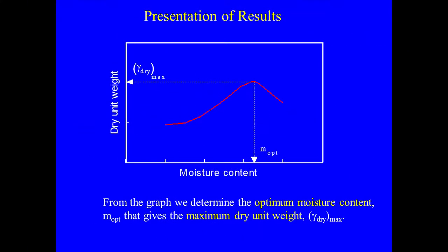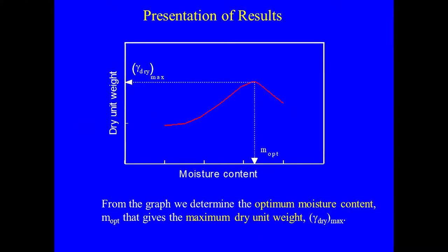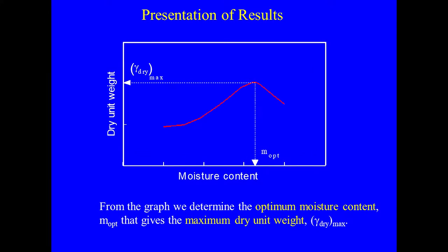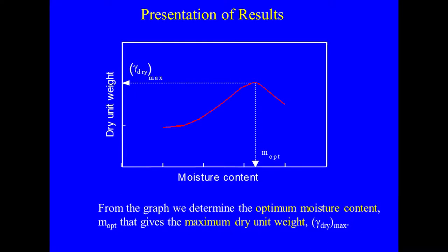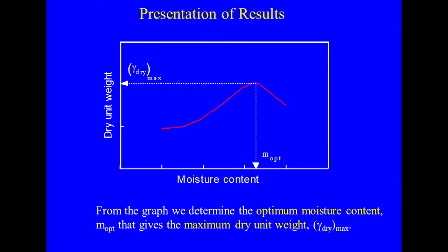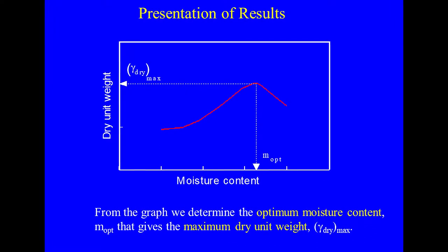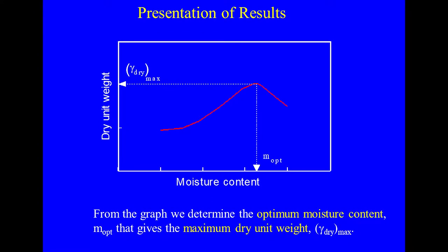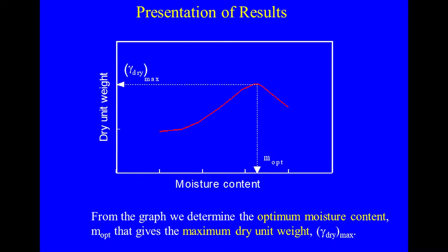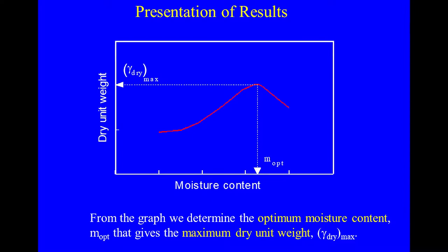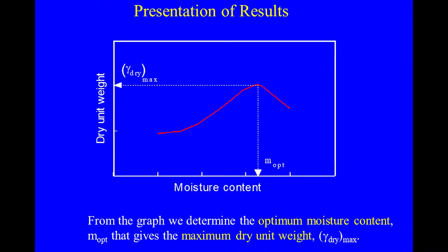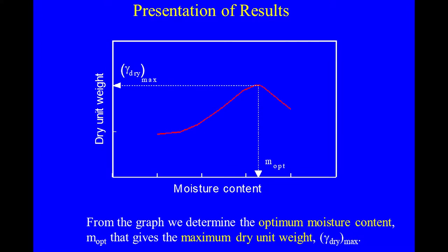A graph is drawn between dry unit weight and moisture content. From the graph, we determine the optimum moisture content (M_optimum) that gives the maximum dry unit weight. The curve peaks — as moisture content increases, the dry unit weight first increases and then, beyond a certain limit, decreases. The increasing side is the drying side and the decreasing side is the wetting side.